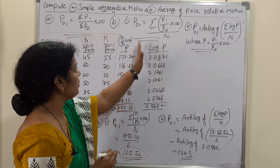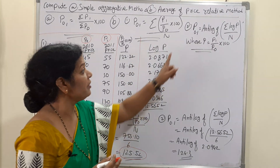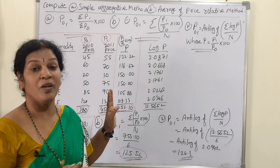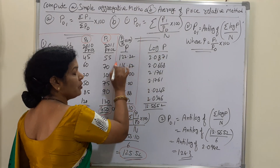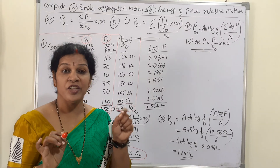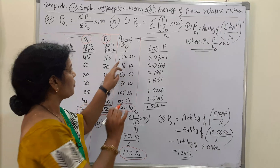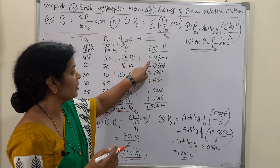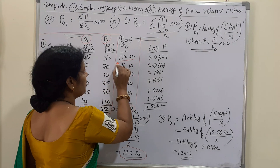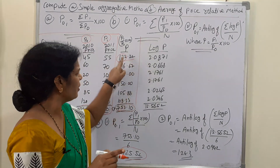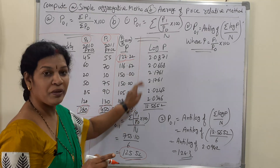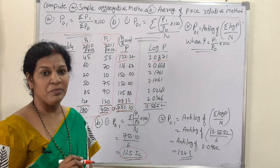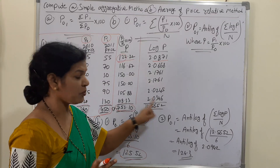Now for the logarithm method. We need antilog of (Σ log P / n). For each price relative value, we take the logarithm. Since the values are three-digit numbers (like 122, 116, 150), the characteristic is 2. We look up the log table values and sum all the log P values, getting Σ log P = 12.5652.